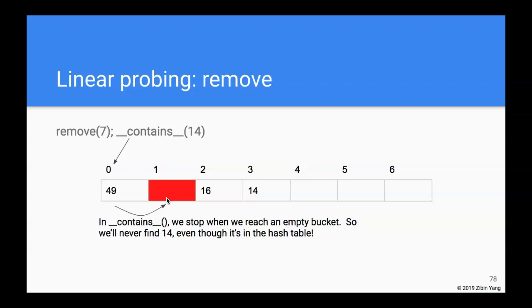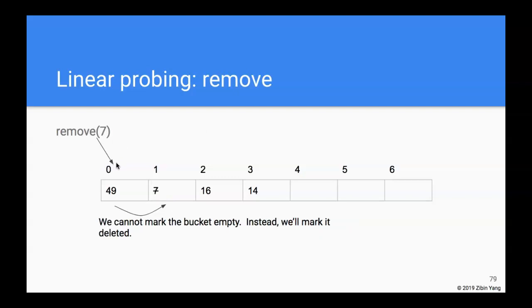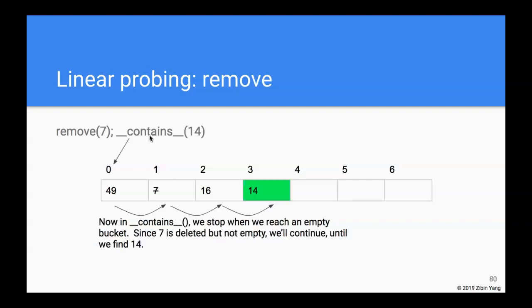So how do we address this? When we remove 7, we cannot simply mark the bucket as empty. Instead we mark it as deleted — meaning it used to contain something but has been removed. Then when we perform a contains for 14: 14 hashes to bucket 0, it's not 49. We reach the deleted bucket — it's deleted, not 14, so we keep going until we find 14 further along.